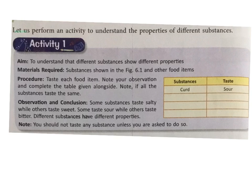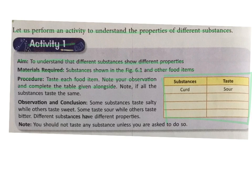Let us perform an activity to understand the properties of different substances. Activity 1 — Aim: to understand that different substances show different properties. Materials required: the substances shown in Figure 6.1 and other food items. Procedure: taste each food item, note your observation, and complete the table. Note whether all the substances taste the same.